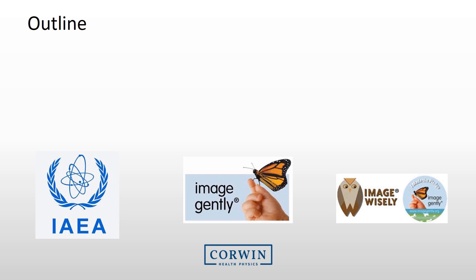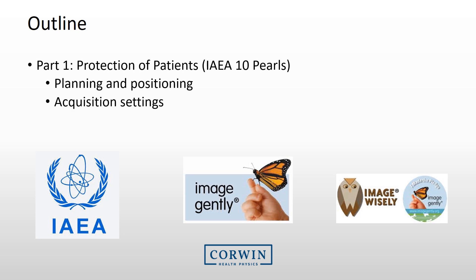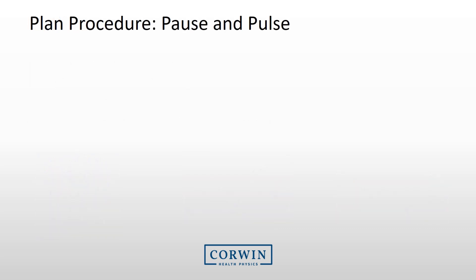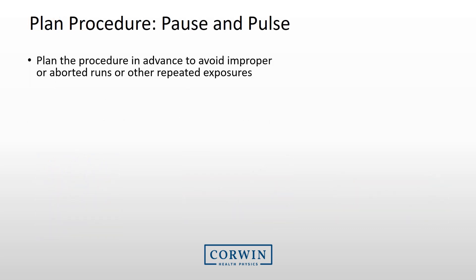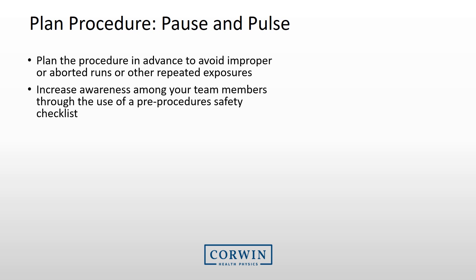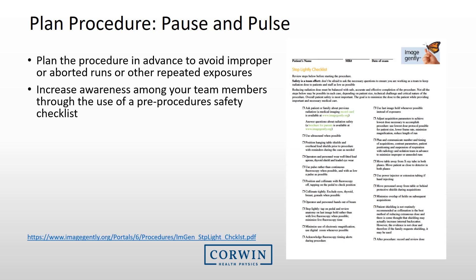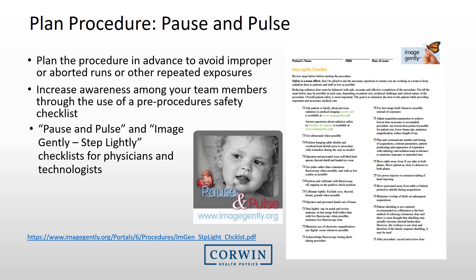The training will be divided into two sections: the first is dose optimization for patients, and the second is radiation protection to staff. Prior to starting a procedure, it is recommended that planning be done to avoid improper or bordered runs and other unnecessary exposures. A safety checklist can be used to increase awareness among team members, with useful resources found on the Image Gently and Image Wisely websites.